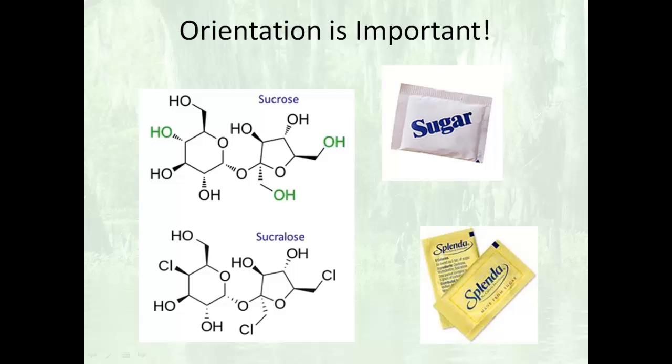Because orientation is important. Here we have two different molecules. We have sugar and we have Splenda. Notice how close they are. The green on the sucrose shows you the difference between those. Yes, it's replacing OH with Cl, but also the orientation is changed.